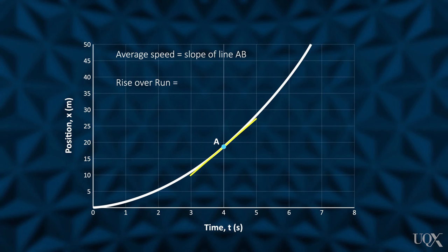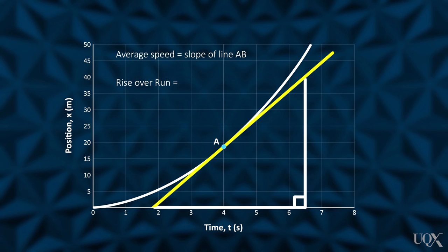Here's an example of how to find the instantaneous speed at 4 seconds. Draw the tangent to the curve at 4 seconds. Extend the tangent across the graph. Draw a right angled triangle with the tangent as the hypotenuse. Measure the rise and run on the triangle and use the formula, speed equals distance over time, to obtain your instantaneous value in meters per second. Here it's equal to 8.9 meters per second.